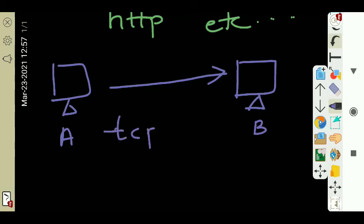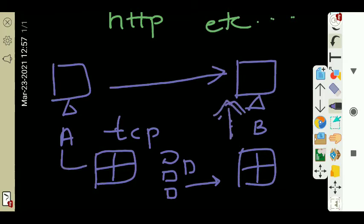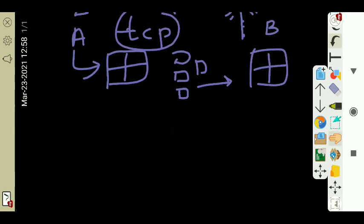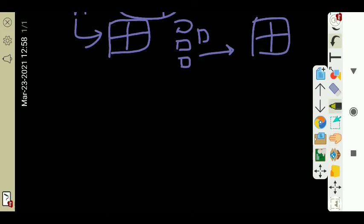Suppose there is computer A and computer B. We use the protocol called TCP. Data is divided into packets and sent. The destination is located. TCP protocols split data randomly, send it, locate the destination, and then combine it in order at the destination. That is the purpose and benefits of TCP protocol.